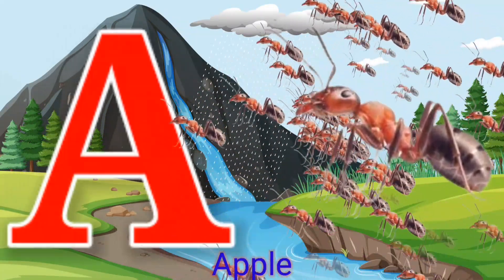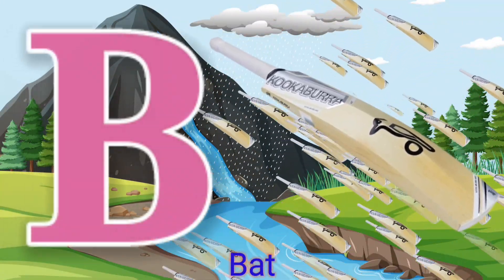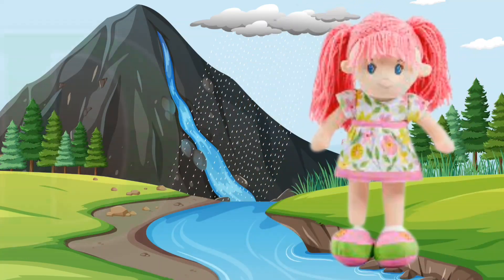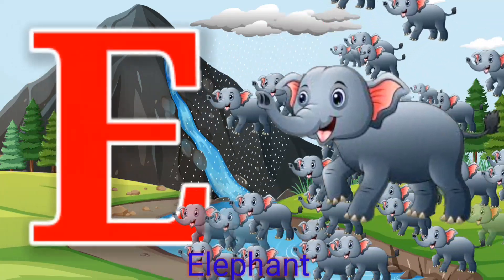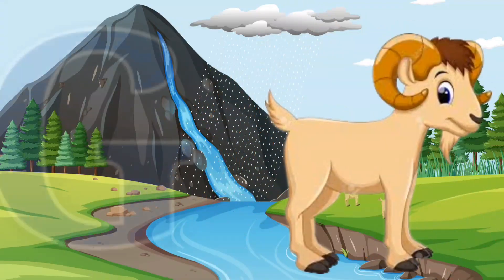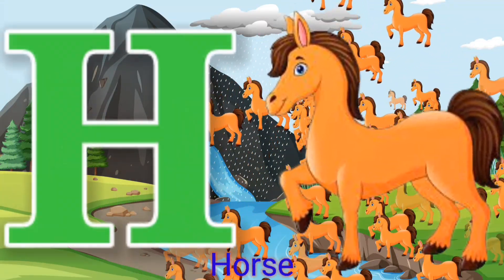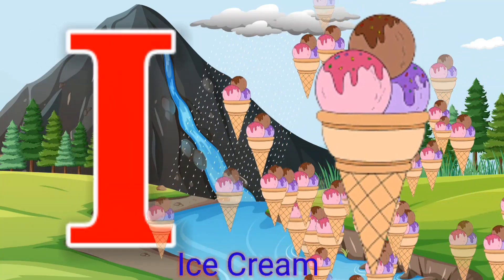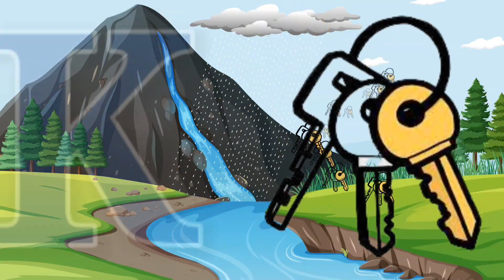A for Ant, B for Bed, C for Cup, D for Doll, E for Elephant, F for Fox, G for God, S for Horse, I for Ice Cream, J for Juice, K for Key.